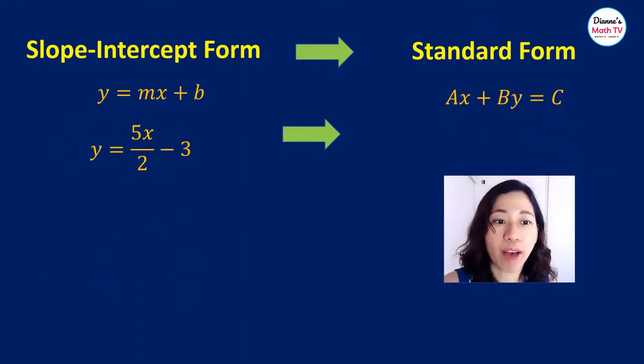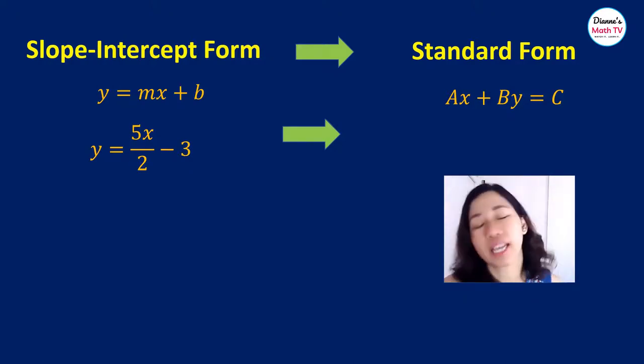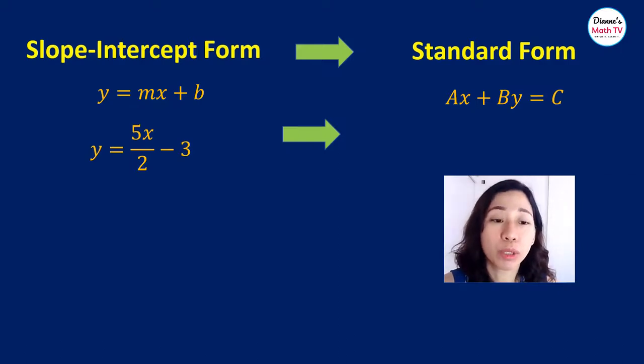Another example. We have y equals 5x over 2 minus 3. Now, usually I do not want to work with fractions. So what do we do in order to eliminate fractions? We multiply by the denominator. In this case, our fraction is 2. I want to get rid of 2 as a denominator, so we multiply both sides by 2.